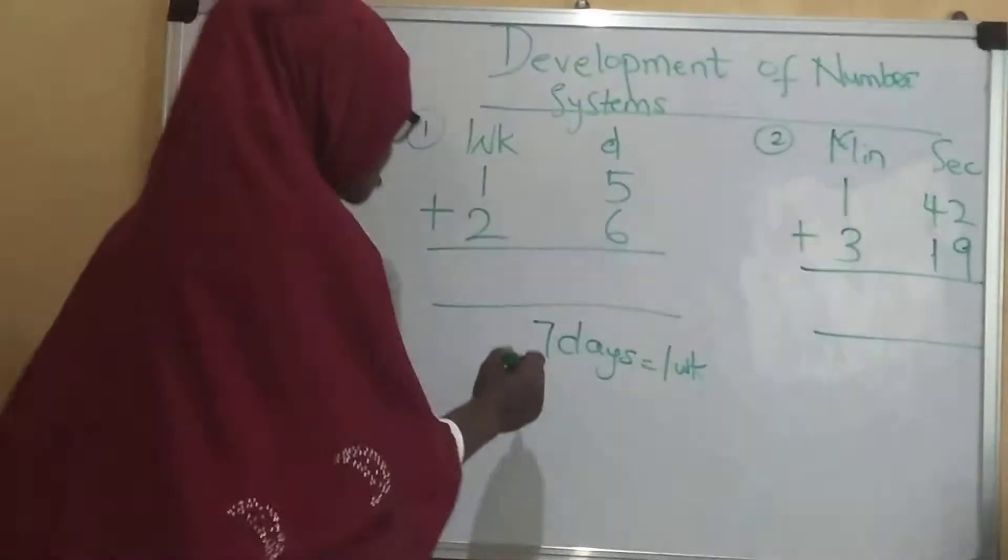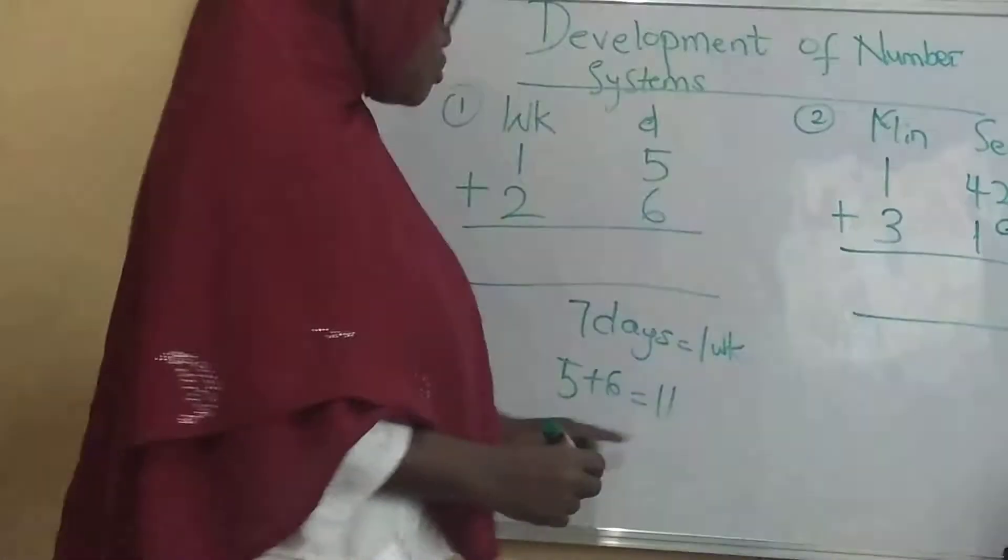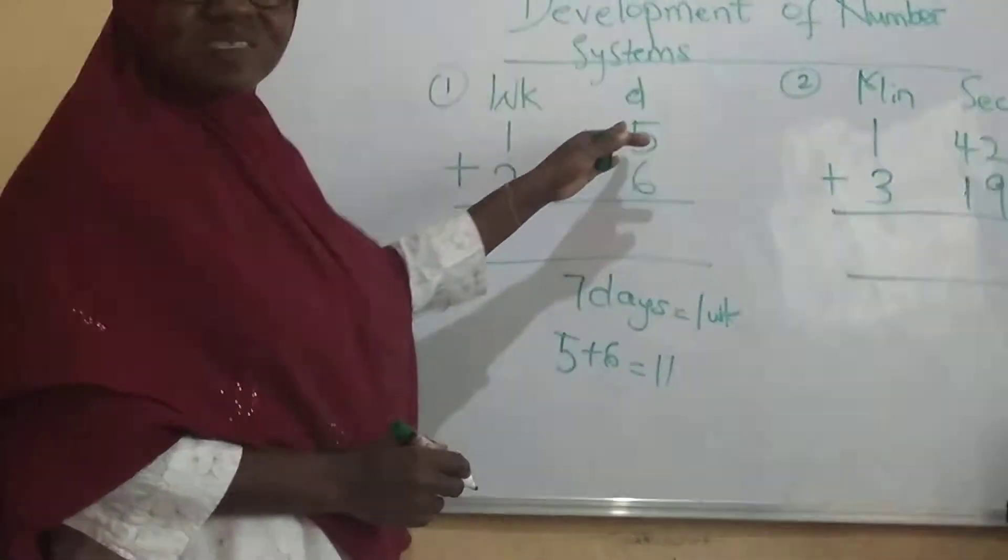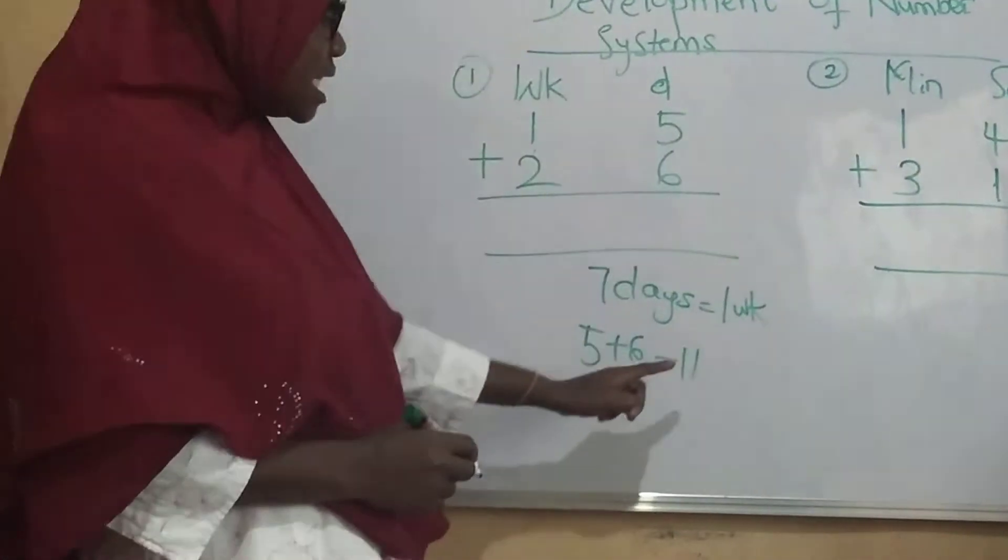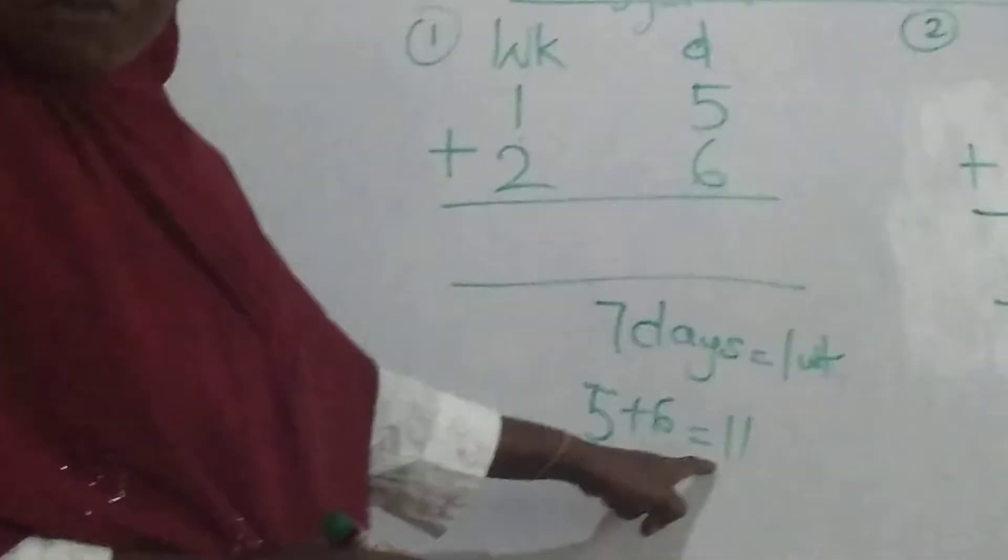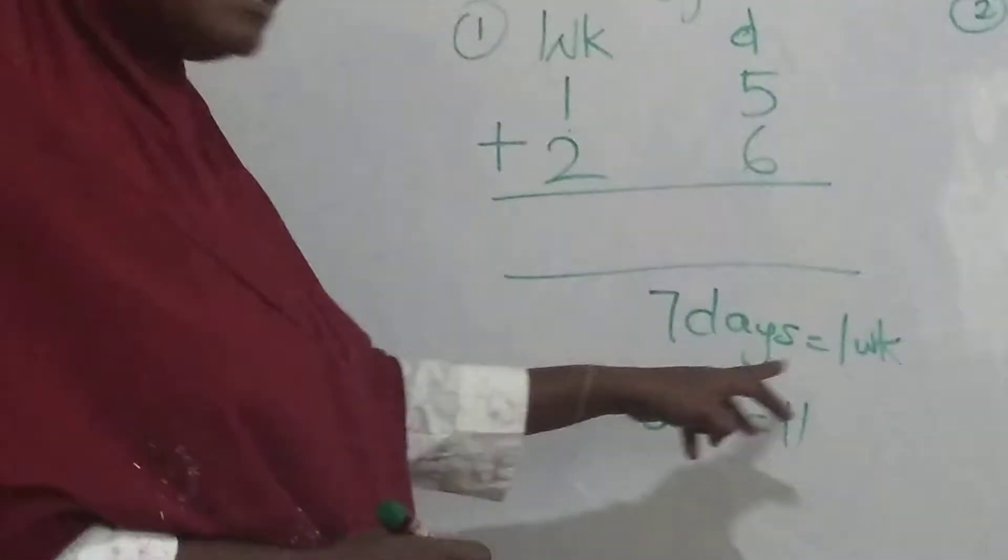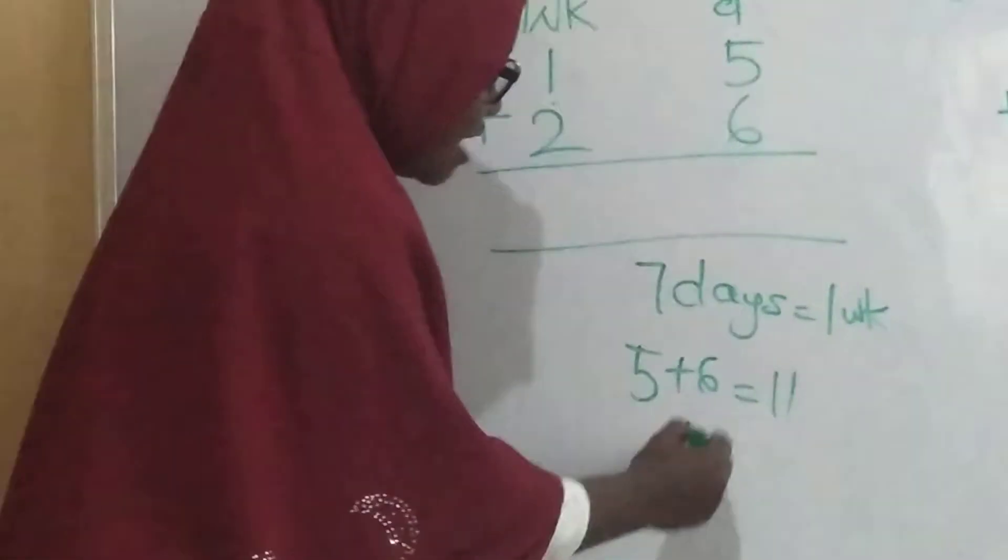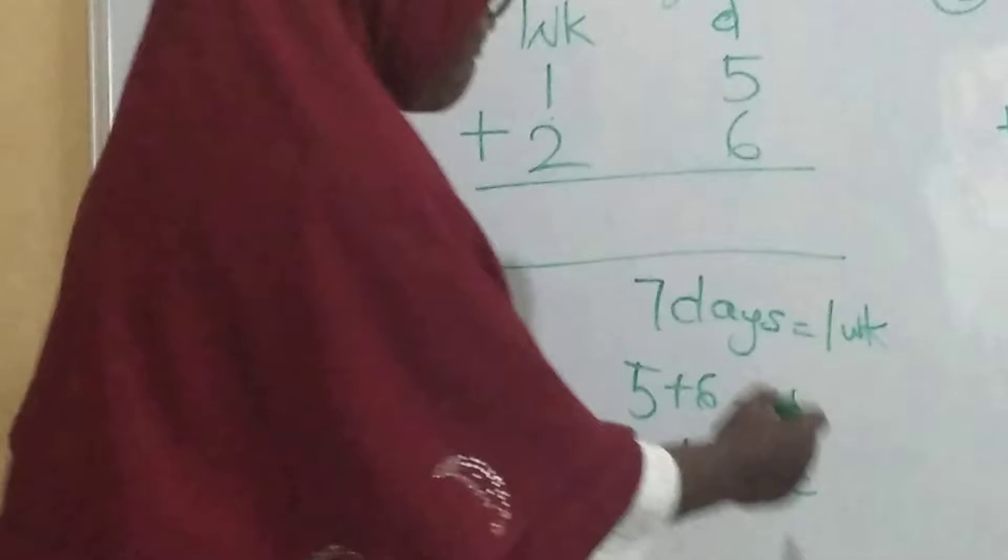Five plus six gives me eleven. Now I'm not going to write eleven here. Why? Because eleven days has exceeded a week. So I need to move it to that side. So what do I do? These eleven days, I'm going to subtract seven from it. Why am I subtracting seven? Because seven days actually make one week. So I'll say eleven minus seven days, and that will give me four.